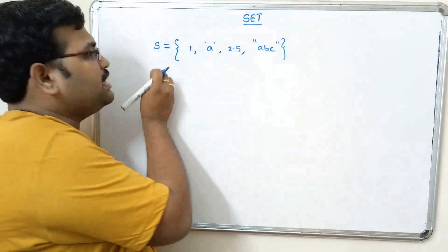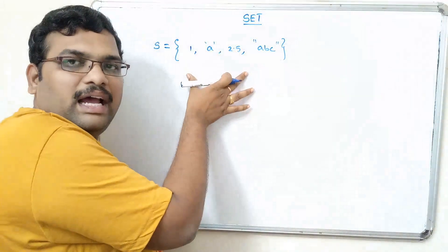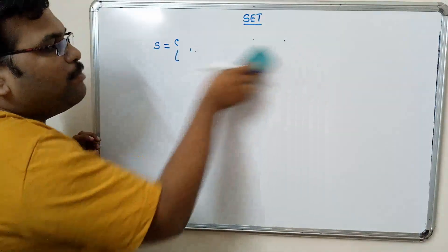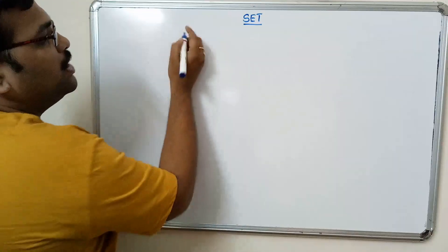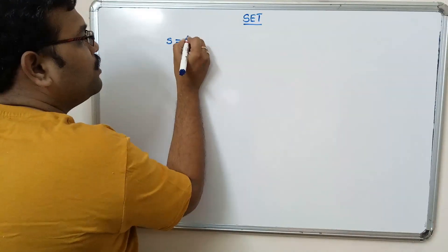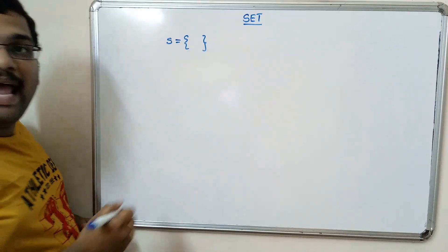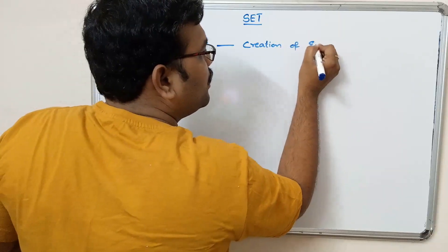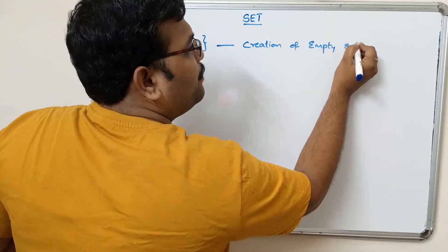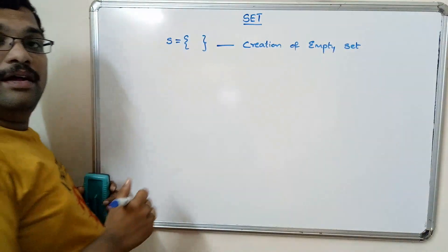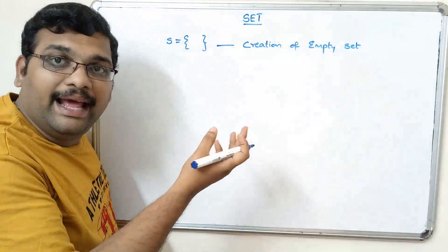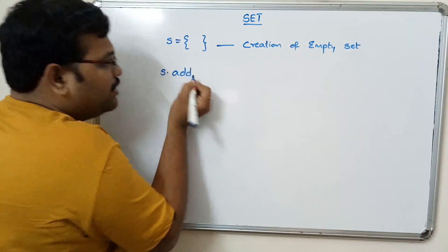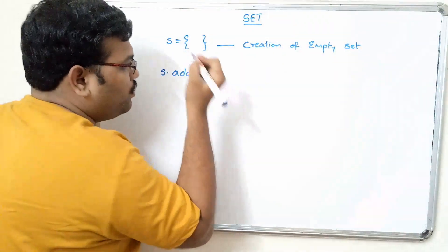To create a set, simply write s = {elements} where elements can be of any type. For an empty set creation, you use s = set(). If you want to add elements into a set, we can use s.add() — there is a function called add.